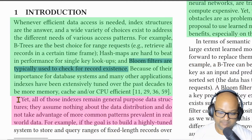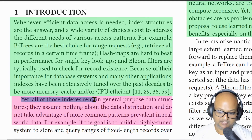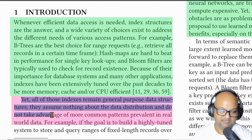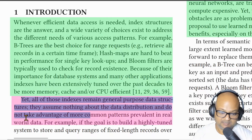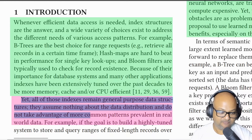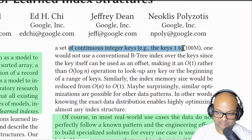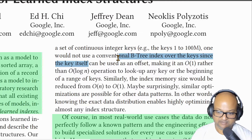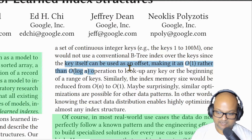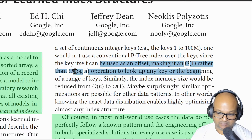But all of these data structures are general purpose. They don't know anything about the distribution of the data that they contain. And knowing that distribution can sometimes drastically improve both the size and the performance of these data structures. To take a somewhat contrived example, if you had a set of continuous integer keys, you wouldn't need a btree to index over them because the key itself could be used as an offset. That means you could do lookups in order one time rather than order log n time.